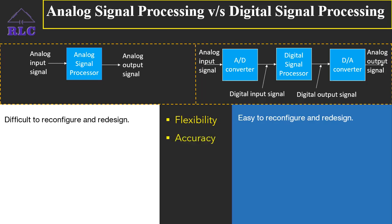Second, accuracy. Since analog systems are hardwired machines, the tolerance in the analog circuit components makes the system less accurate. Tolerance is the amount of errors obtained due to the system components in an analog system. Whereas DSP works on digital signals which are discrete sequences with finite or infinite length. So digital systems are more accurate when compared to analog systems.